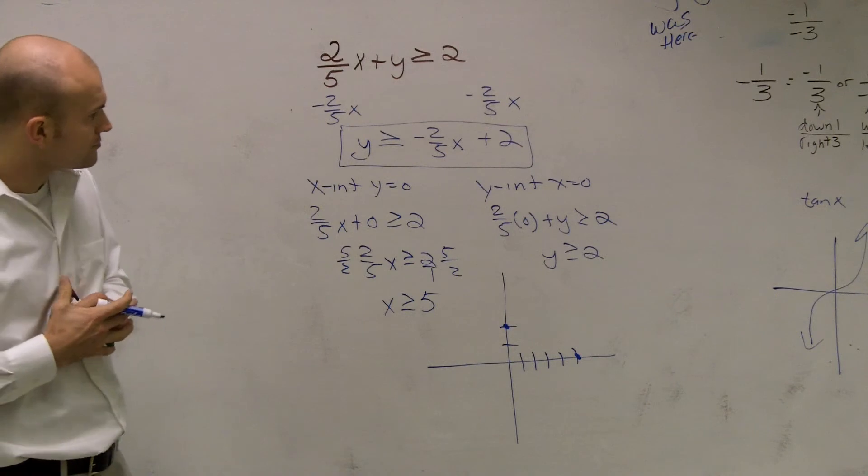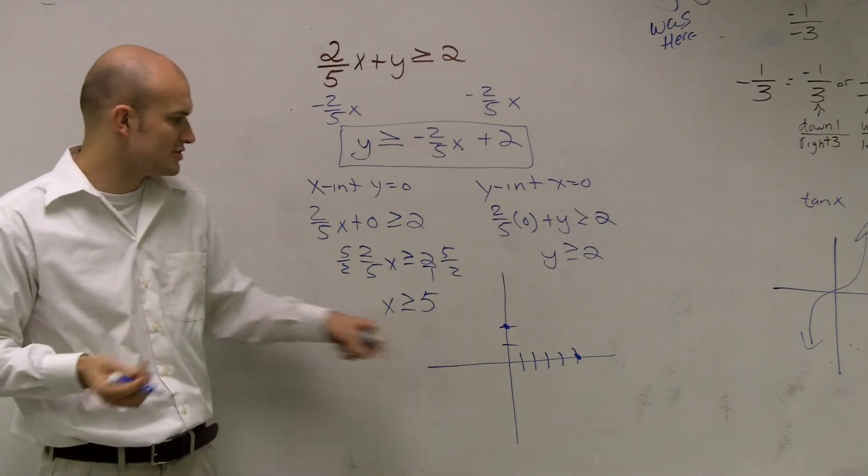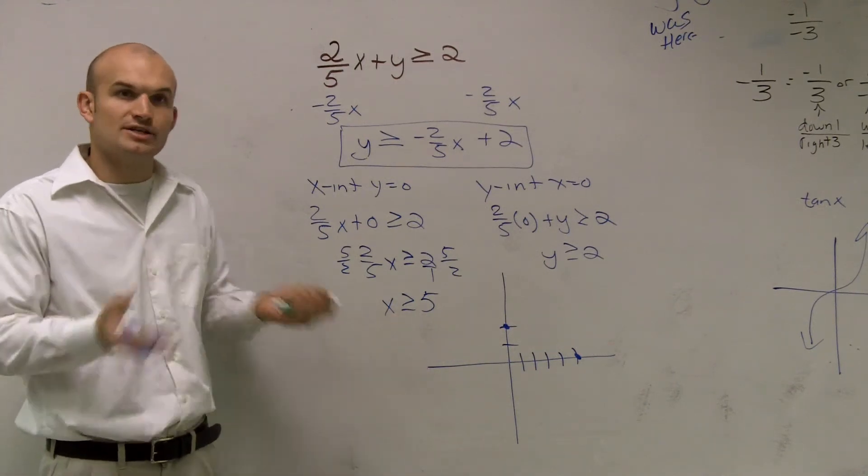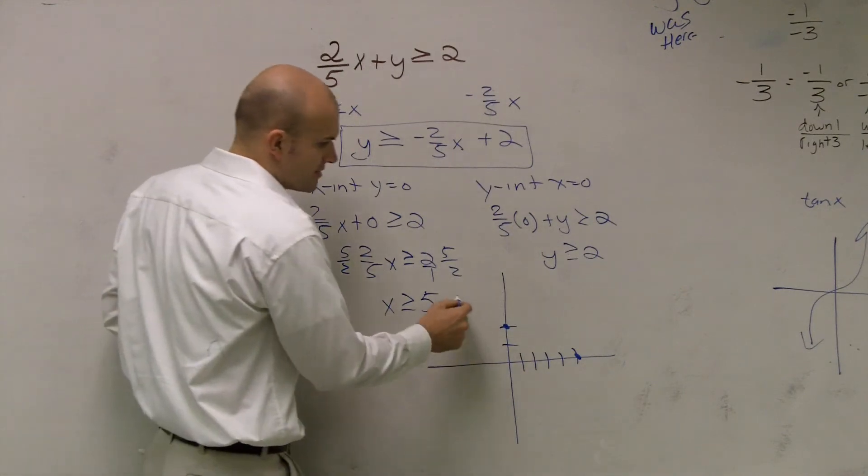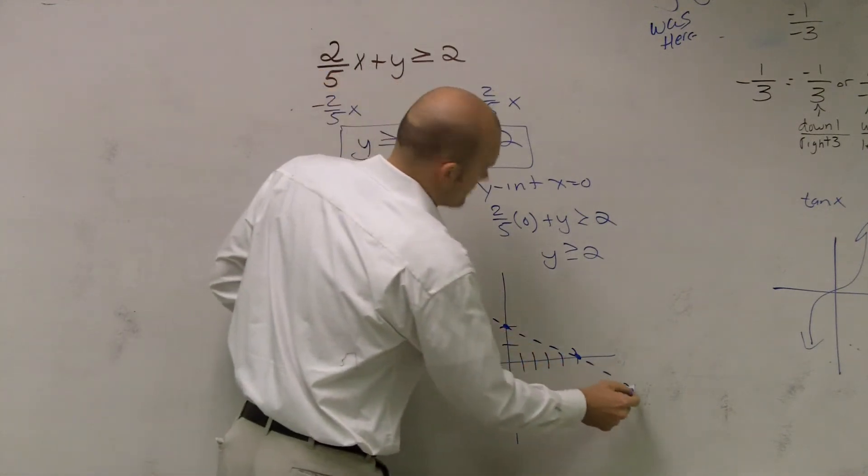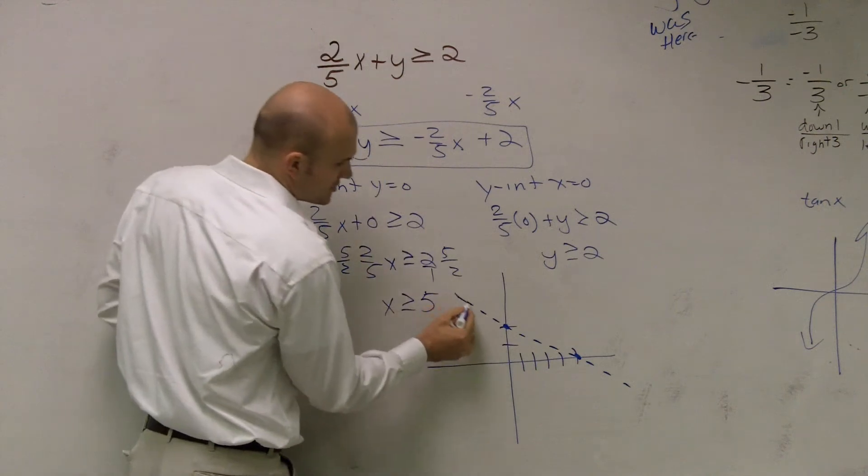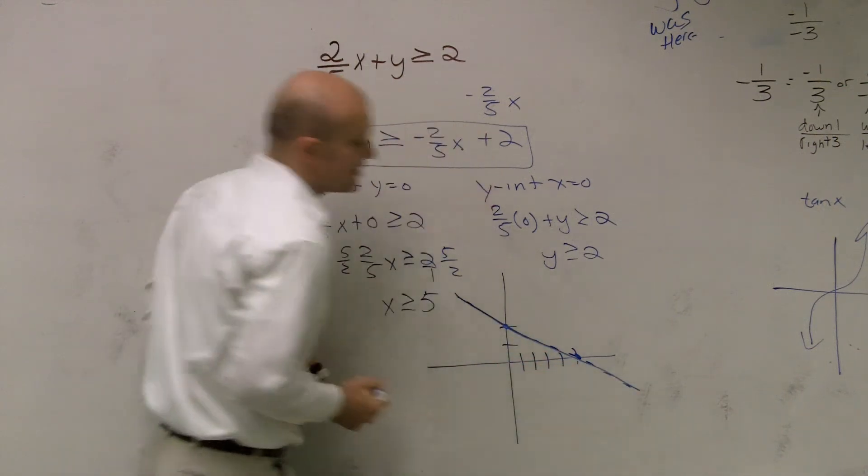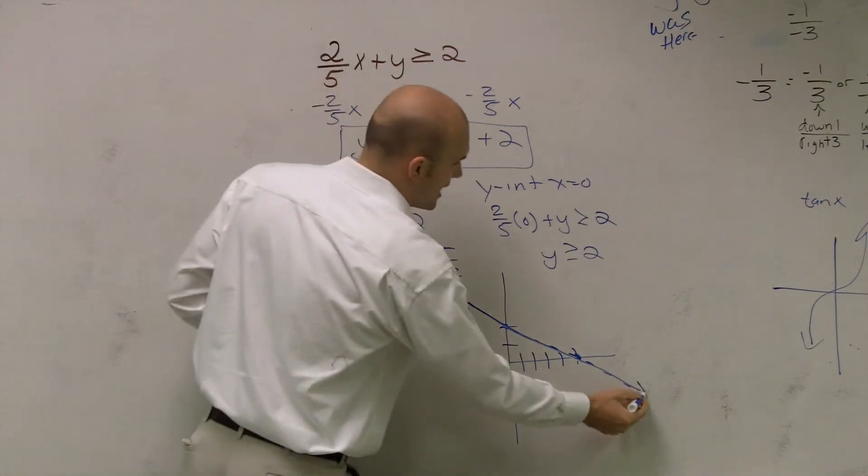So now what we need to determine is when is our graph? Is it going to be true or false? So what I'll do is, oops, I'm sorry. That's a greater than or equal to, right? Since it's a greater than or equal to, we know it's going to be a solid line.